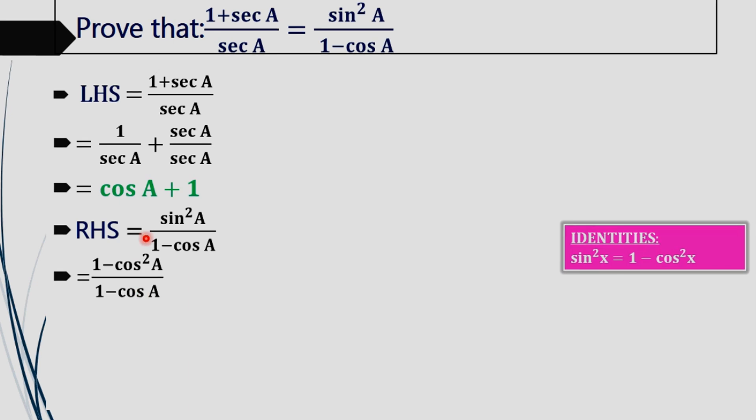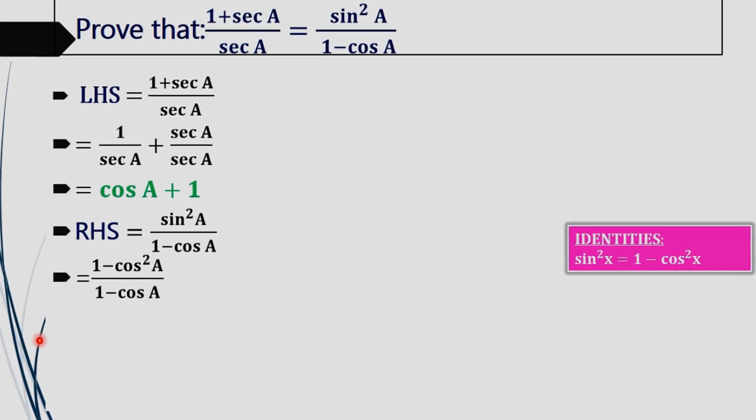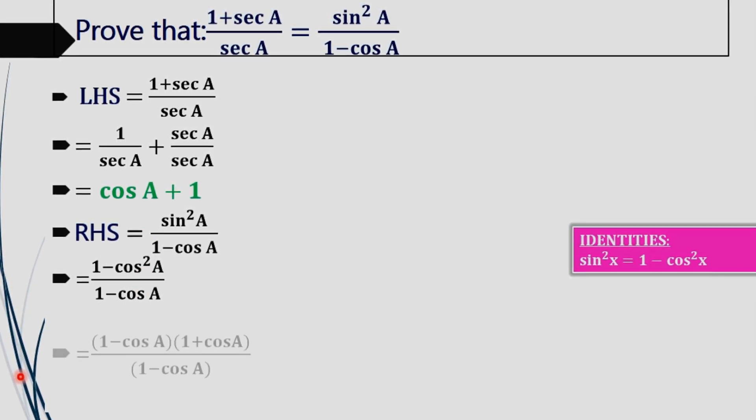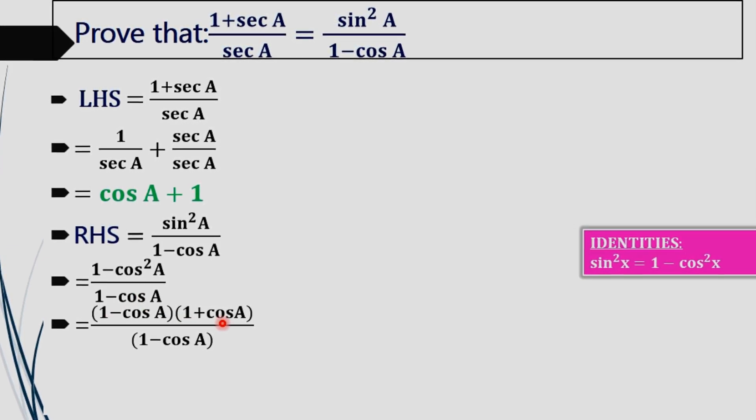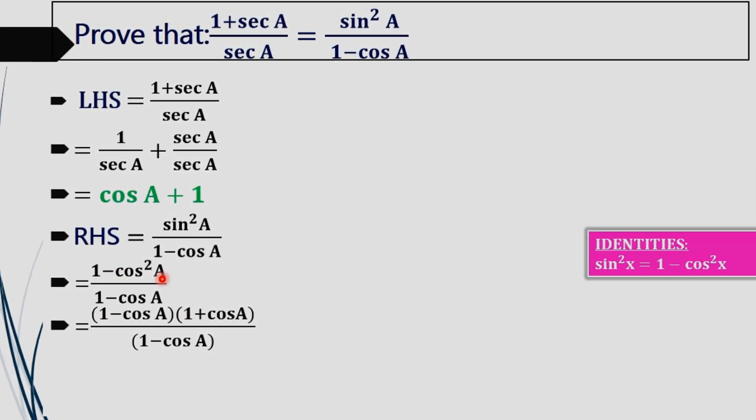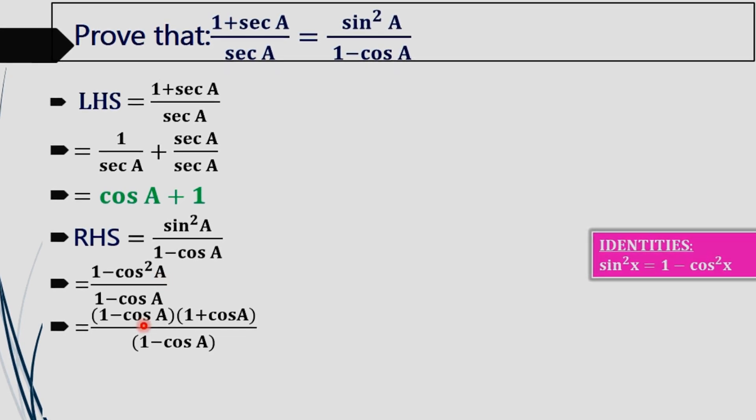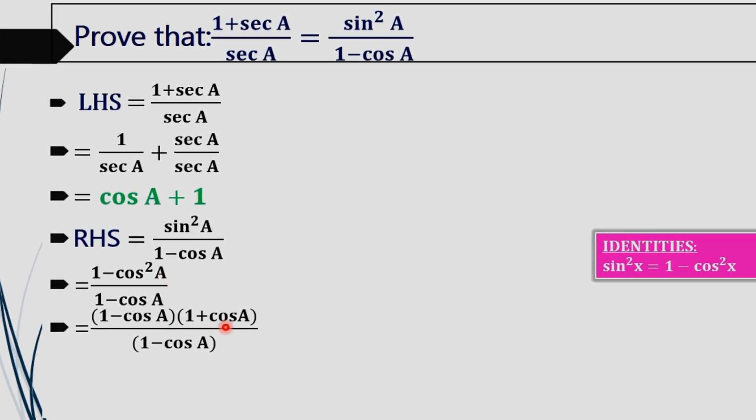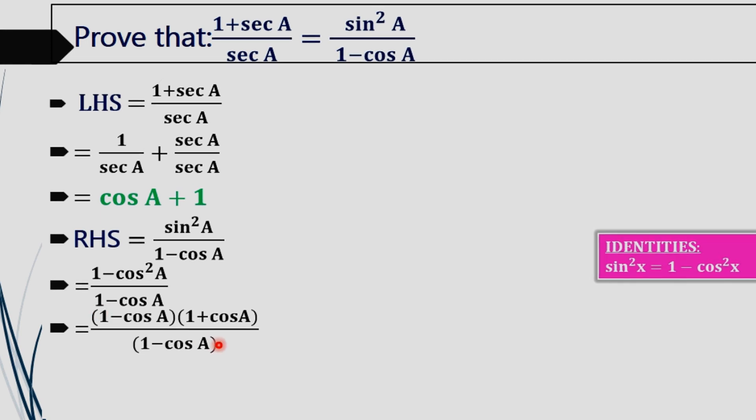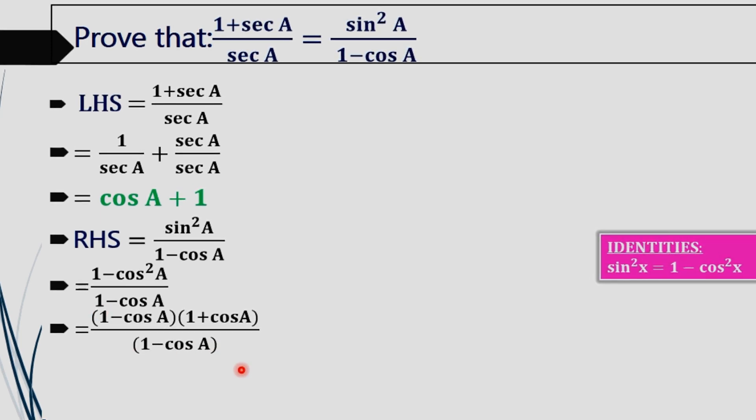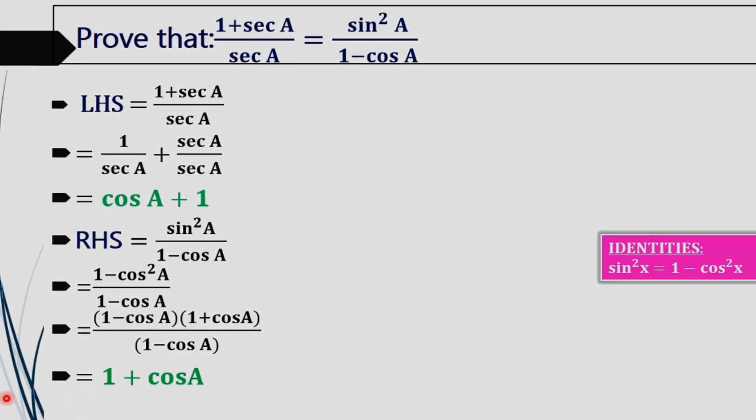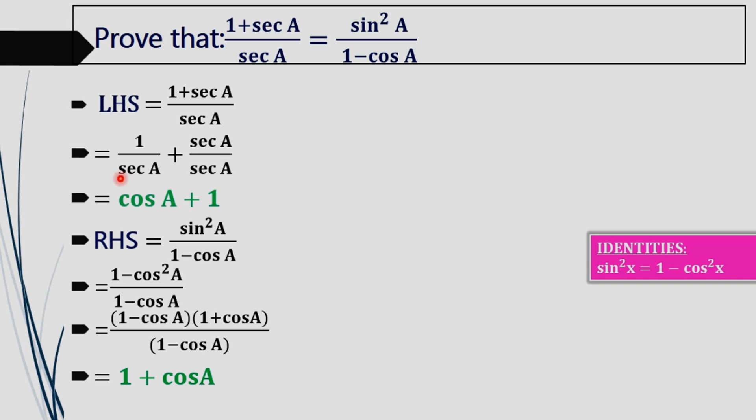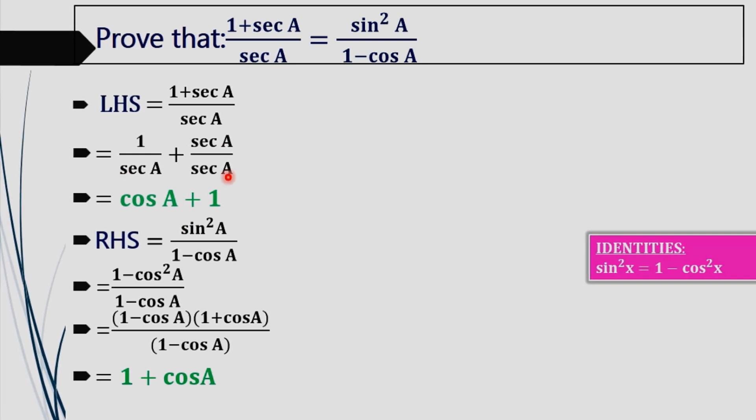That is (1 - cos²A) / (1 - cos A). What is 1 - cos²A? In order to simplify 1 - cos²A, we can rewrite it as (1 - cos A)(1 + cos A). That is A² - B² = (A - B)(A + B). Now, (1 - cos A) and (1 - cos A) will cancel each other, and what we will get is cos A + 1, or 1 + cos A, which is our LHS.